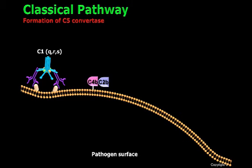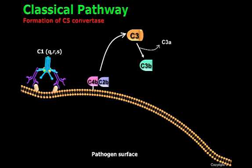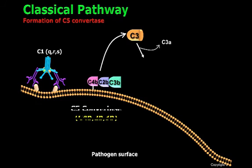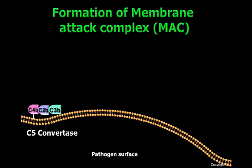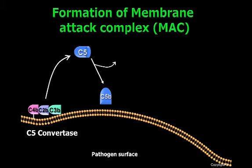When the C3-convertase cleaves C3, some of the C3b can bind to this complex, generating a new complex called C5-convertase, or C4b-C2b-C3b. The C5-convertase will cleave C5 in order to generate C5b and C5a.